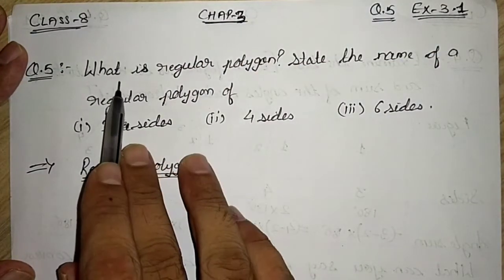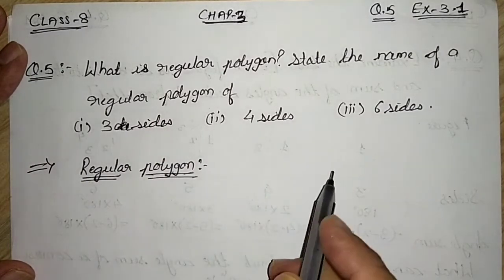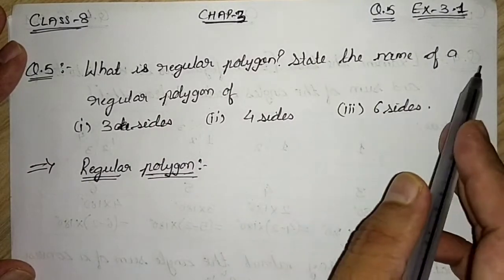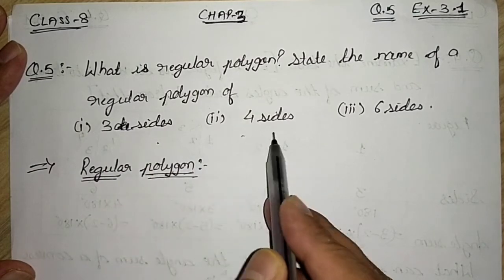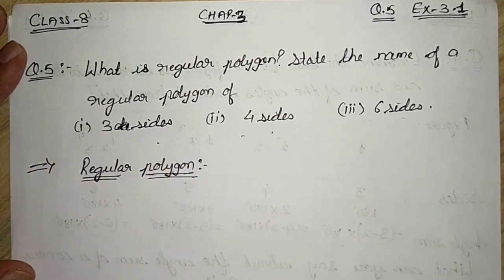Question number 5 says: What is a regular polygon? State the name of a regular polygon of three sides, four sides, and six sides.